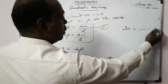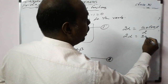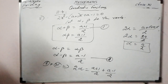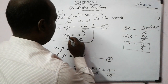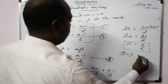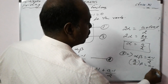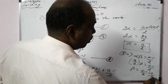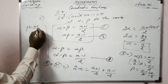Using product: alpha·beta = a-1. Substituting alpha = a/2: (a/2)·beta = a-1, so beta = (a-1)/(a/2) = 2(a-1)/a. Therefore alpha = a/2 and beta = (a-1)·(2/a).